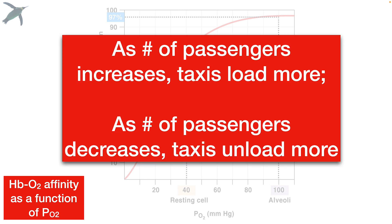So as the partial pressure of oxygen increases, hemoglobin loads more. And as the partial pressure of oxygen decreases, hemoglobin unloads more. So in our analogy, as the number of passengers goes up, taxis load. And as the number of passengers goes down, taxis unload. But here's the thing. We're going to start changing the shape of the taxi now.